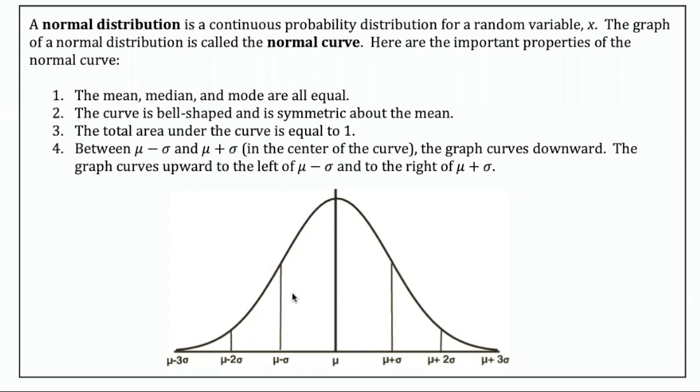And there are four important properties for you to know about the bell curve. Number one, the mean, median, and mode are all equal. And that's represented by this vertical line right here. You can see down at the bottom, it's been labeled mean. That's the symbol for the mean. And it turns out in a normal curve, the mean, and the median, and the mode will all be equal.